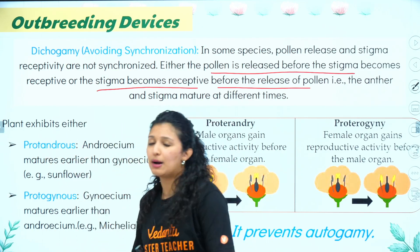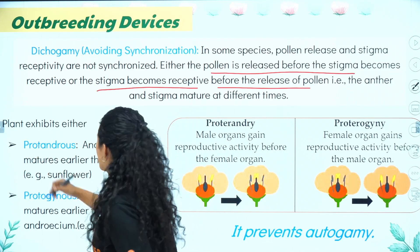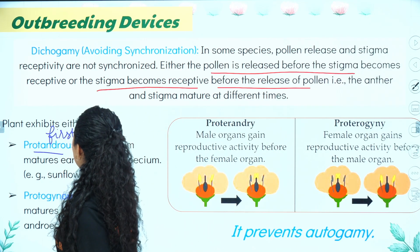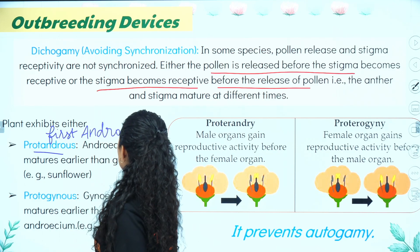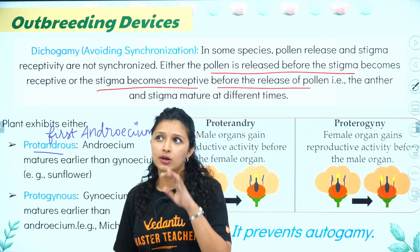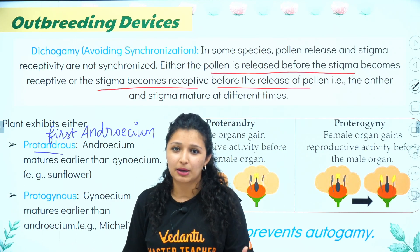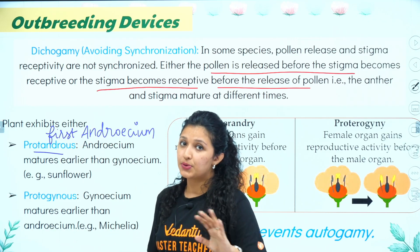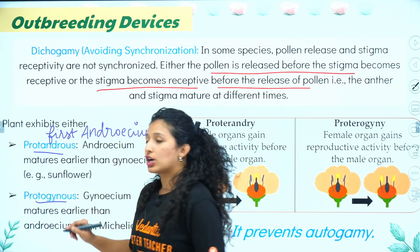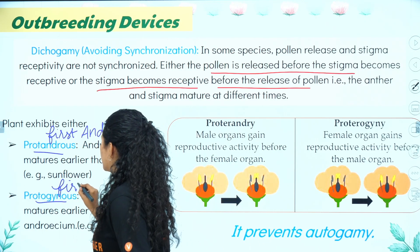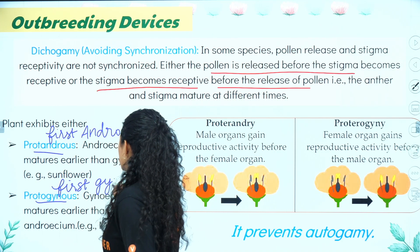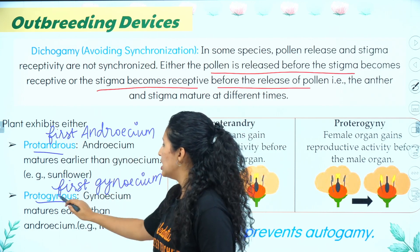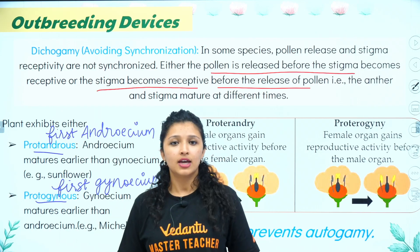Proto means first. In Protandry, the androecium matures first — the sunflower is an example. Protogynous means the gynoecium matures earlier than the androecium. So by disrupting synchrony, autogamy is prevented in the same flower.